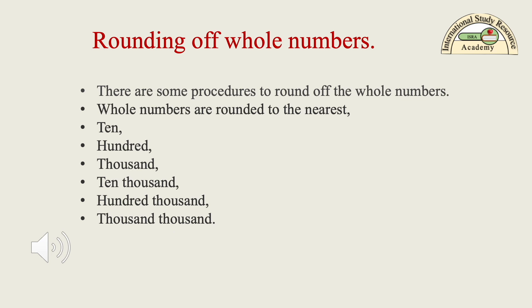Rounding of whole numbers — there are some procedures to round off a whole number. Whole numbers are rounded to the nearest 10, 100, 1,000, 10,000, 100,000, and 1,000,000.